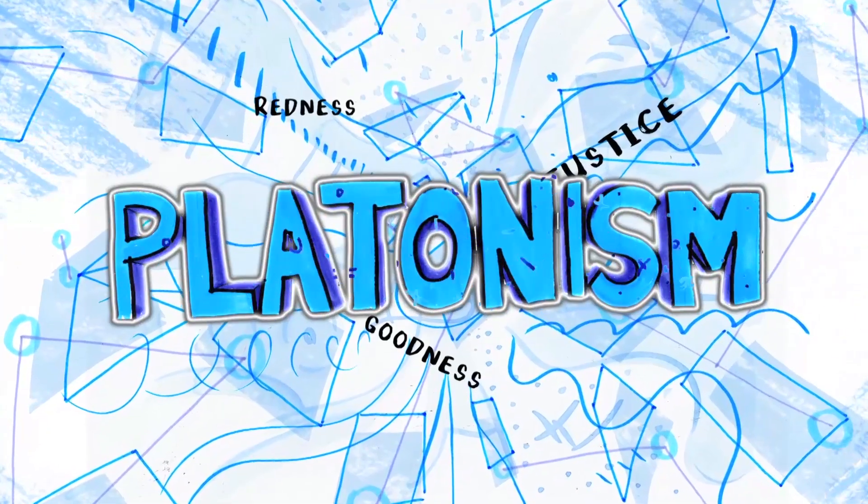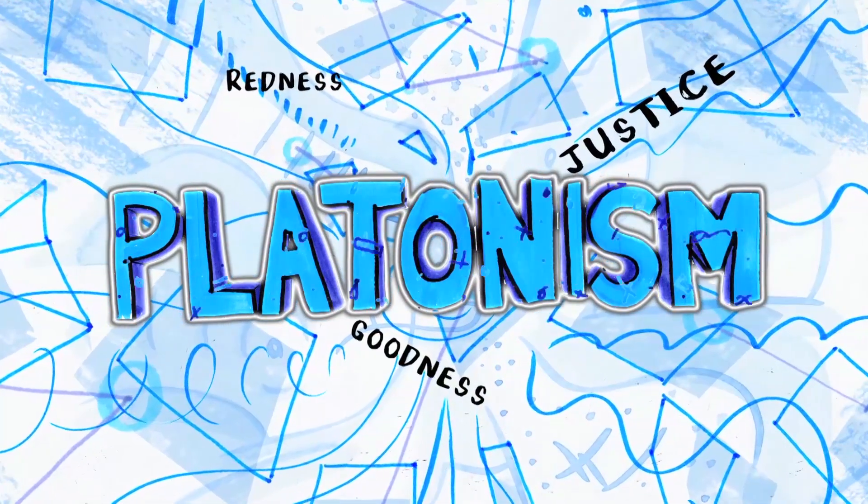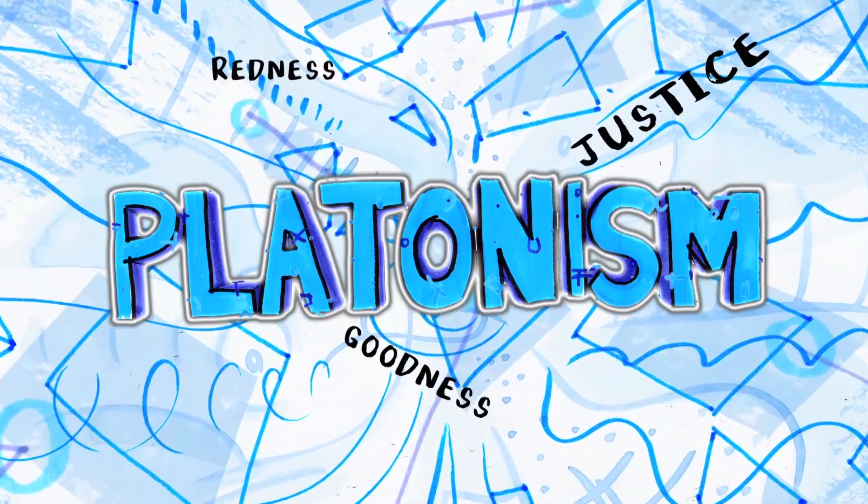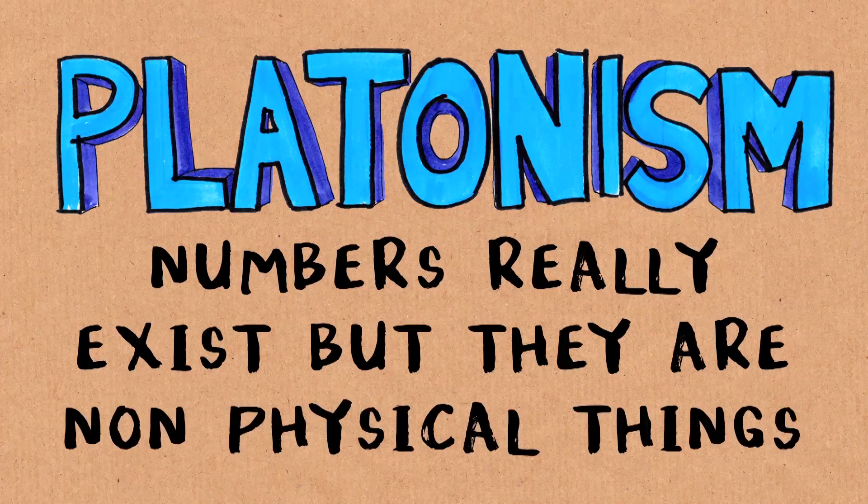That goes by the name Platonism. Plato thought that properties like redness and justice and goodness exist, but not in the physical world. They exist in the world of forms. Platonism about mathematics is kind of like that. It's saying that these things really exist, but they're non-physical things.